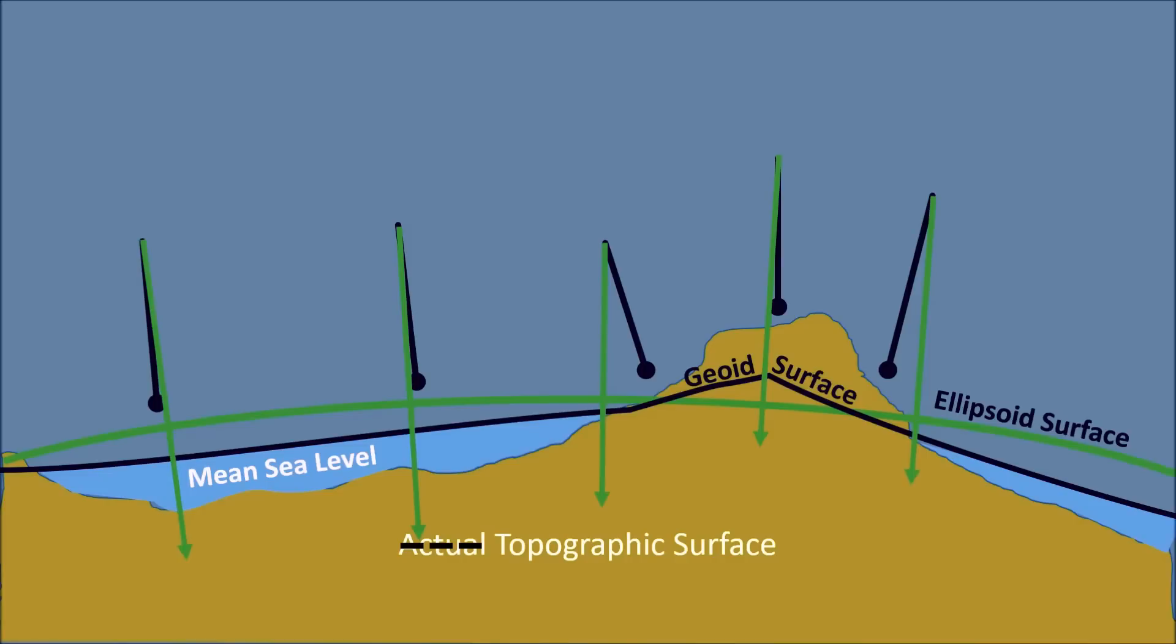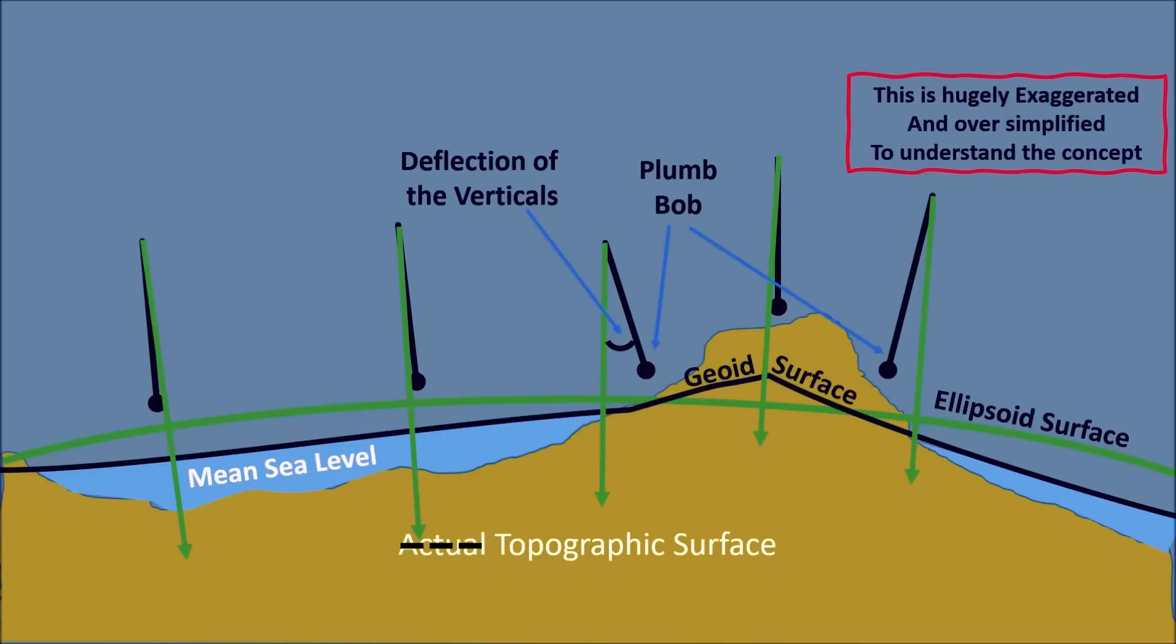And the black lines are plumb bobs which is always perpendicular to the local geoid, or I should say these plumb bobs are local verticals that act on the local gravity. So you can see that there is an angular difference between local verticals of ellipsoidal and geoidal surface. The red arrows indicate the height difference between ellipsoidal and geoidal surface.